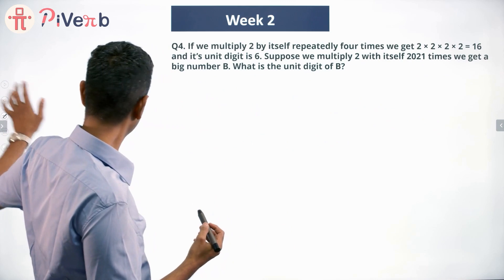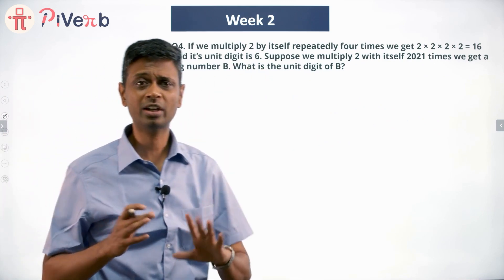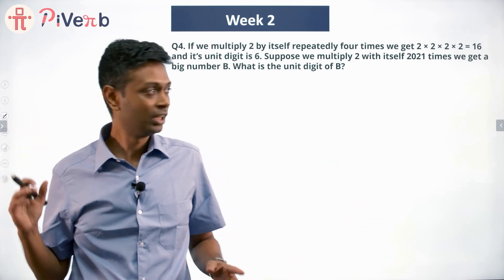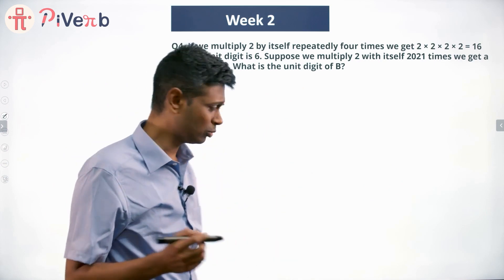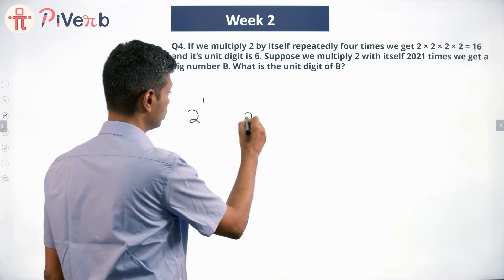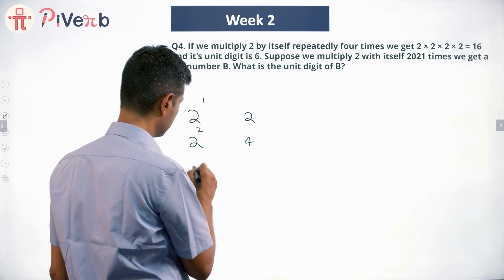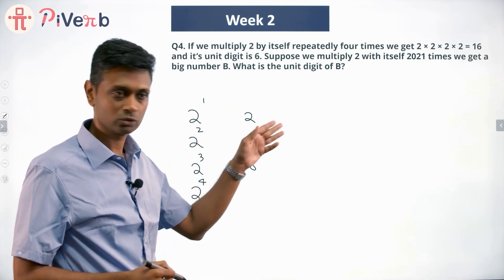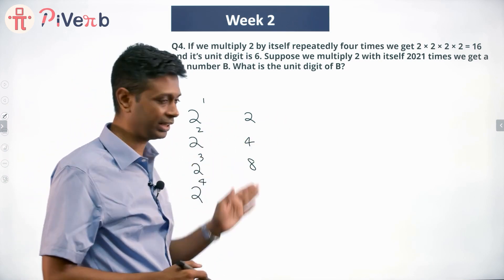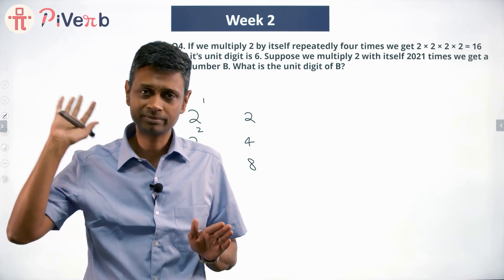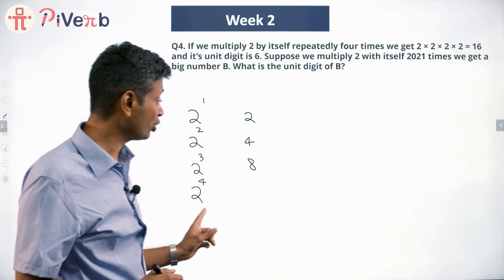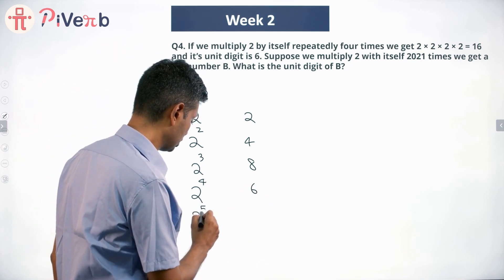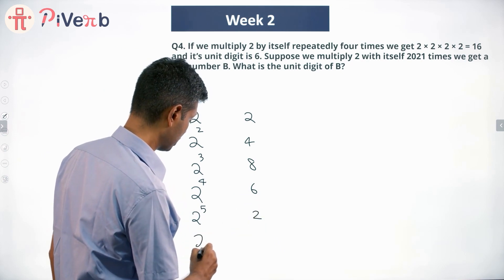We are only worried about the units digit — not the number itself, which will be around 600 to 700 digits long. So let's track the units digit only. 2^1 has units digit 2, 2^2 has units digit 4, 2^3 has units digit 8. Up to 2^3 the numbers have only one digit so life is easy. 2^4 is 16 — ends in 6. 2^5 is 32 — ends in 2. 2^6 is 64 — ends in 4.